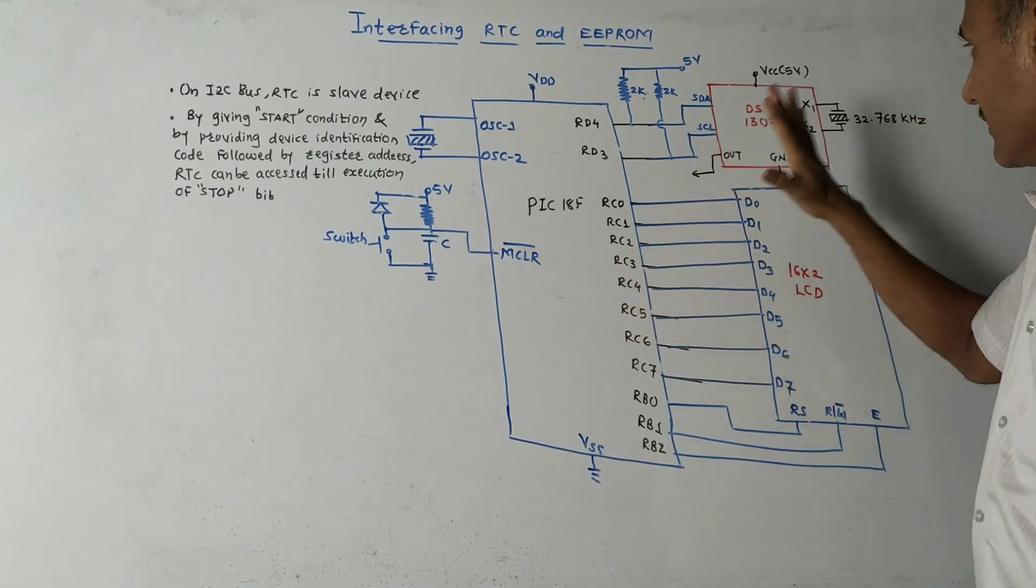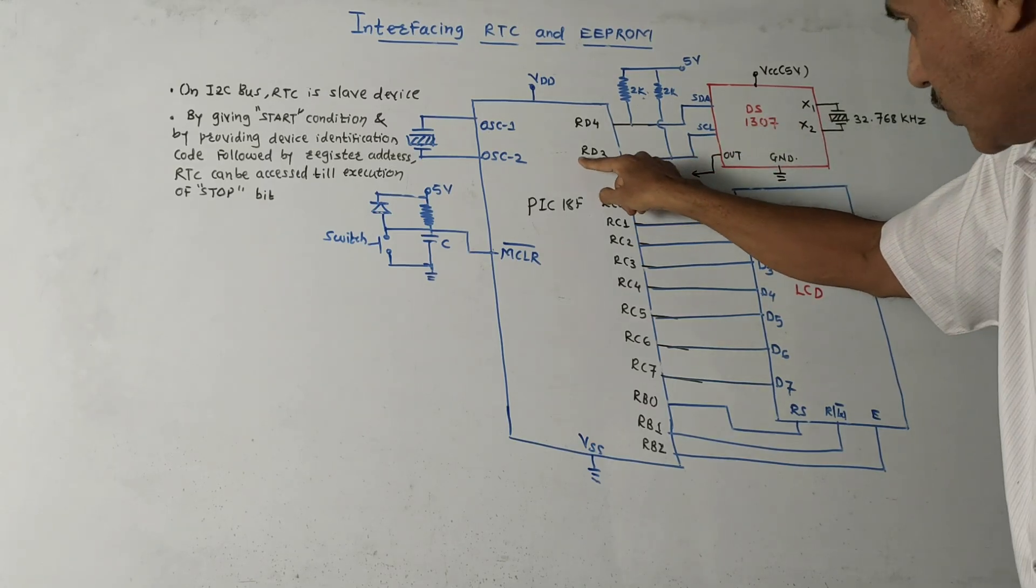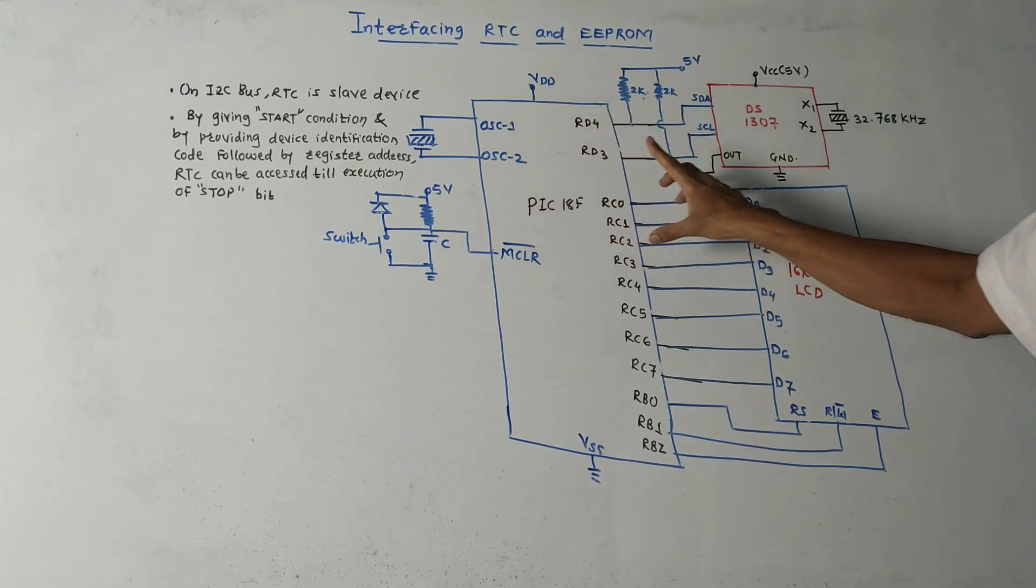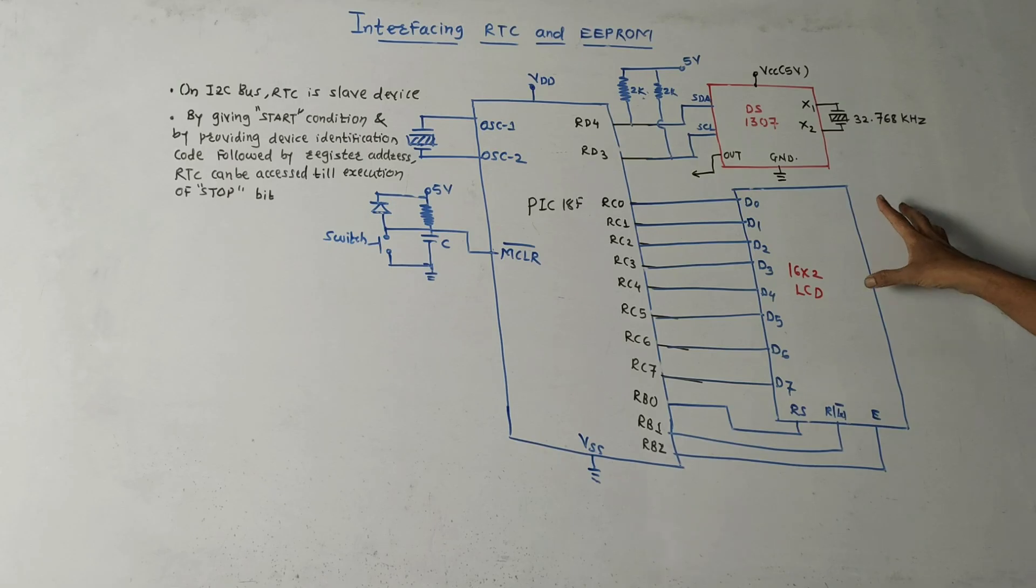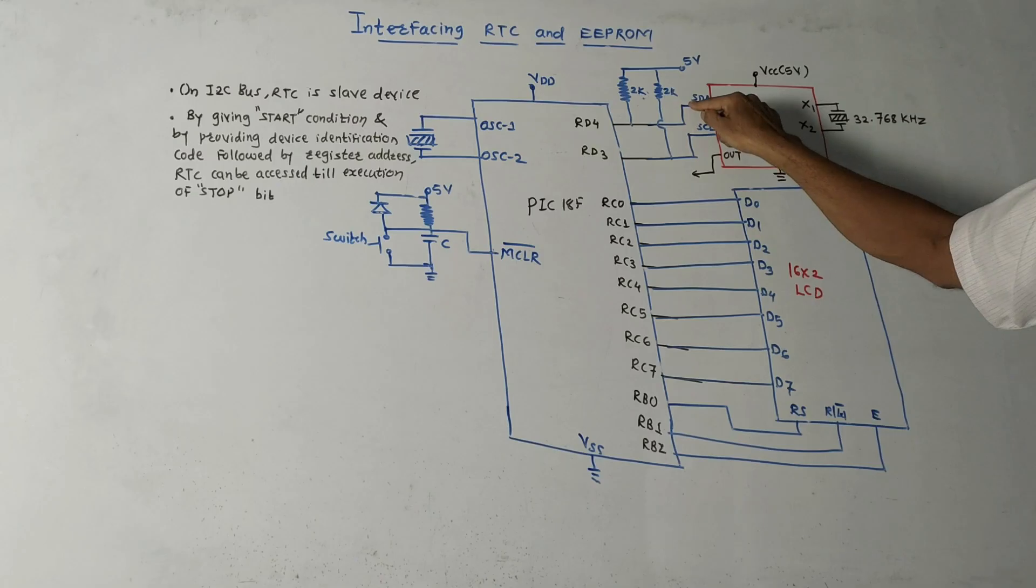This is DS1307 which is RTC, connected to pins RD3 and RD4 of port D of PIC 18F microcontroller. We have to connect a crystal of 32.768 kilohertz. This is the simplified diagram.